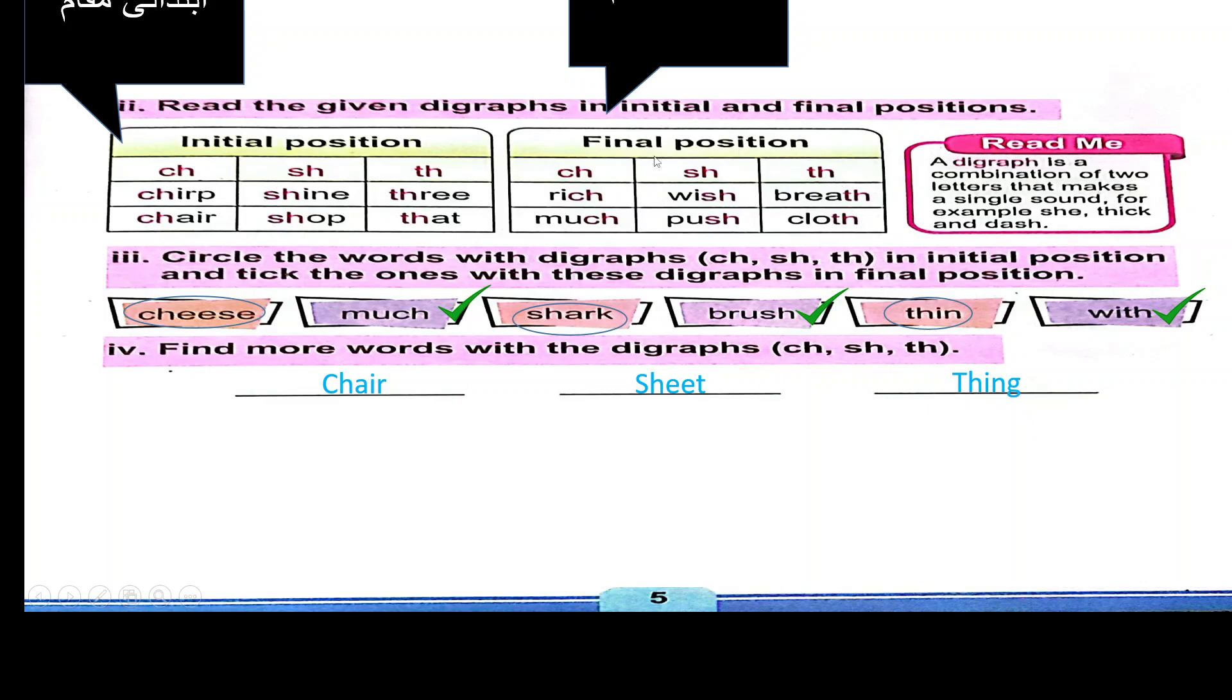In the previous video, I told you what initial and final words are. A diagraph is a combination of two letters that makes a single sound. For example, shape, thick, dash.